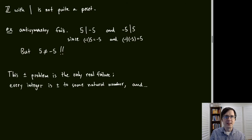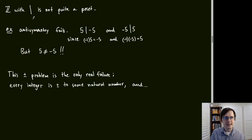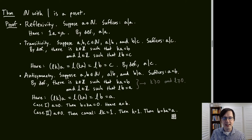Since every integer is plus or minus some natural number, we can instead consider the natural numbers with the divides relation, which is indeed a POSET. We verify the three properties: reflexivity, transitivity, and anti-symmetry.